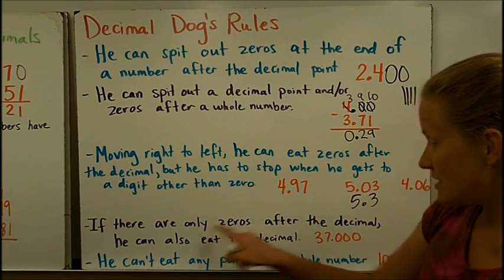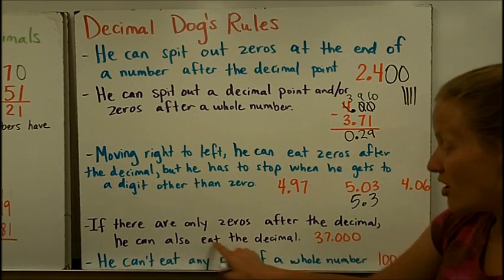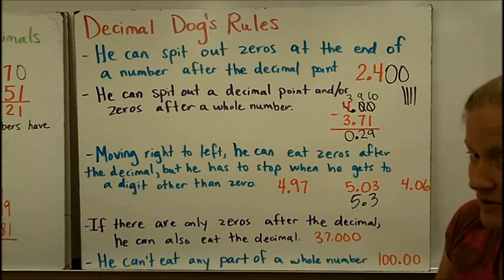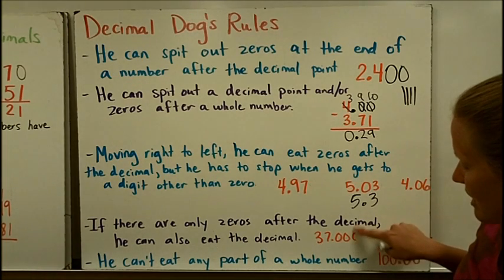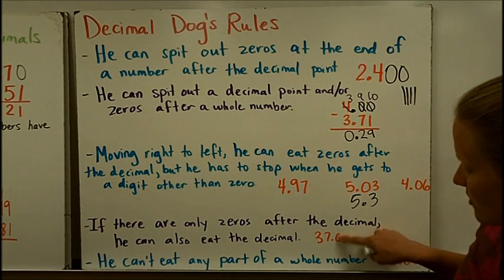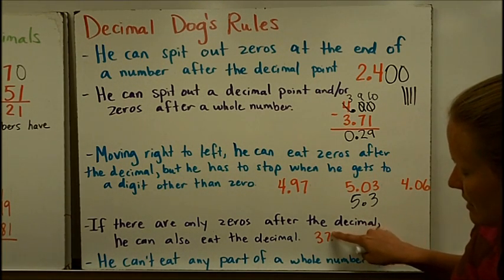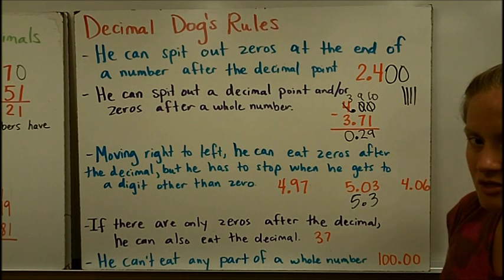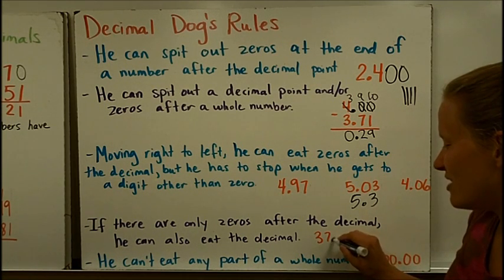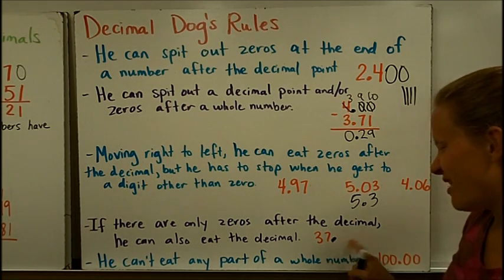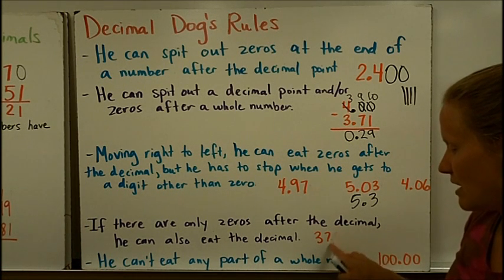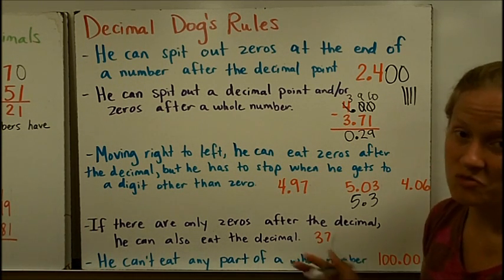If there are only zeros after the decimal, he can also eat the decimal. So he eats zeros, but he eats decimals too. Right to left, chomp it up. He can eat that decimal too. So that's just thirty-seven. You never want to leave a number with a decimal and nothing after it. Just let decimal dog do his job.